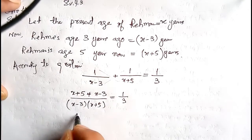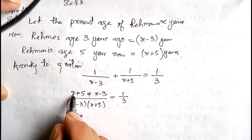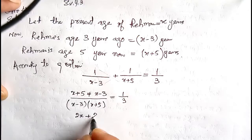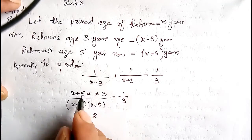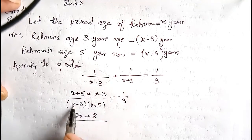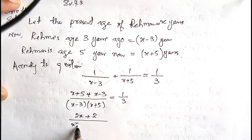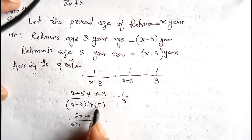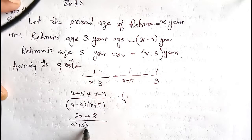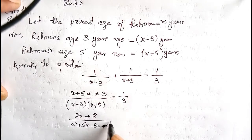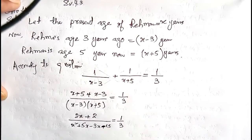So we have 2x plus 2 divided by x squared plus 5x minus 3x minus 15, which is equal to 1/3. Expanding: numerator is 2x plus 2 and denominator is x squared plus 2x minus 15. This is equal to 1 by 3.